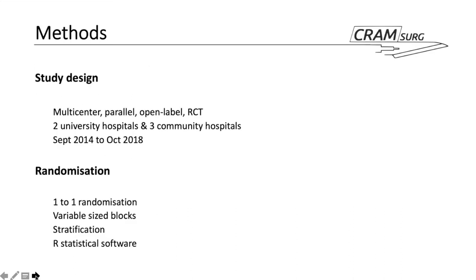Looking at the methods: this was a multi-centre, parallel, open-label, randomised clinical trial undertaken at two university hospitals and three community hospitals, with enrolment between September 2014 and October 2018. Randomisation was one-to-one with variable block size of either two, four, or six, generated using R statistical software with the blockrand package. The sequence was stratified according to the inclusion criteria.